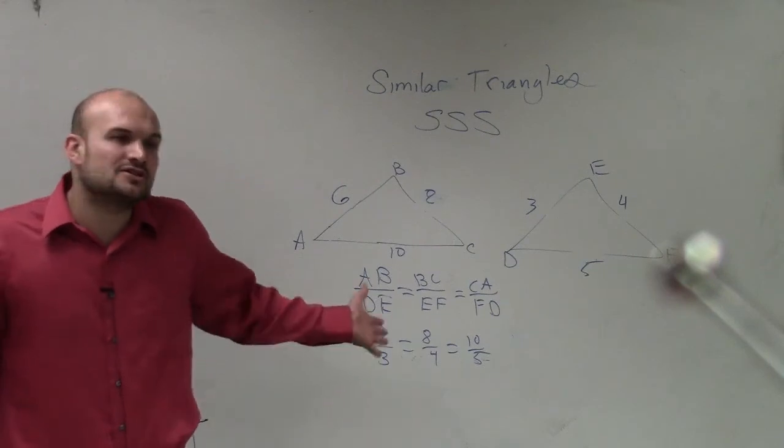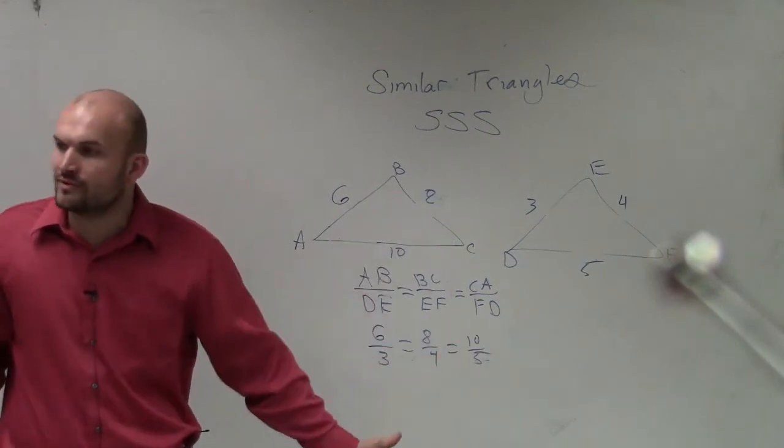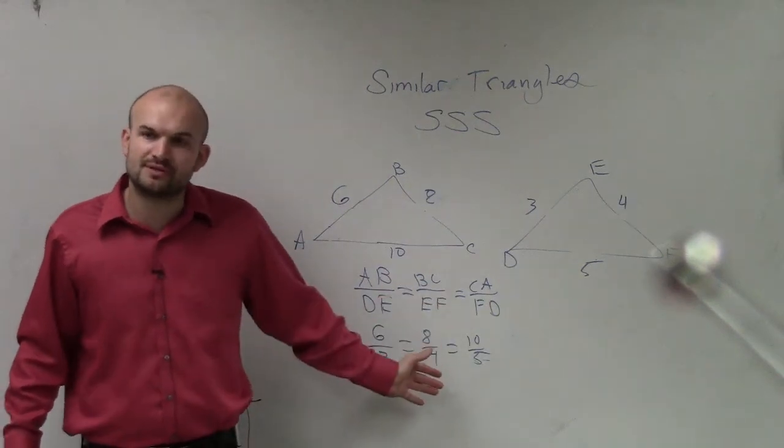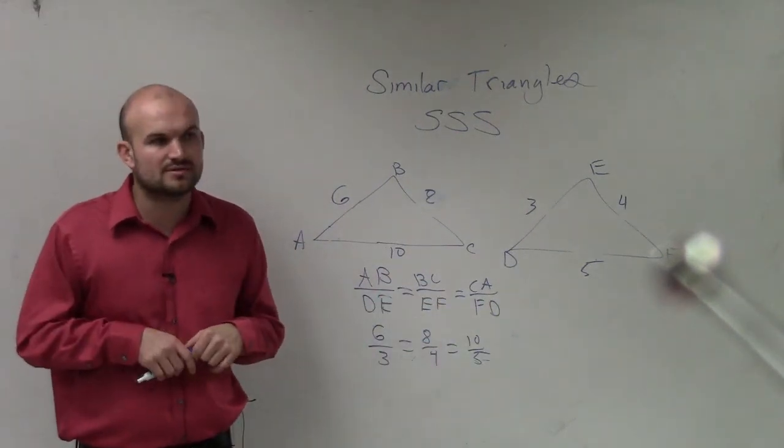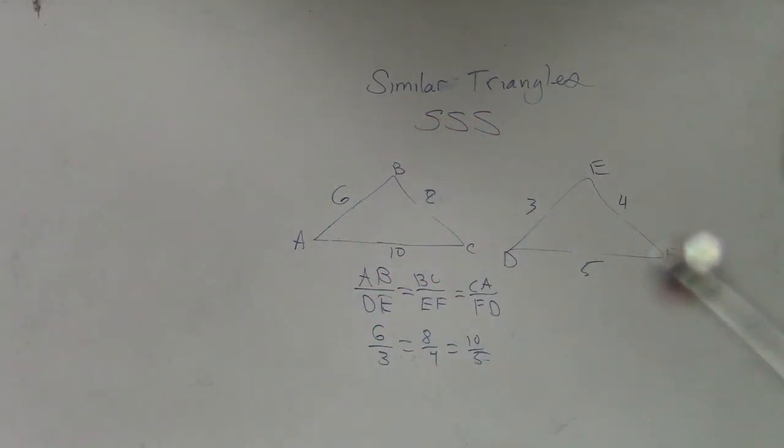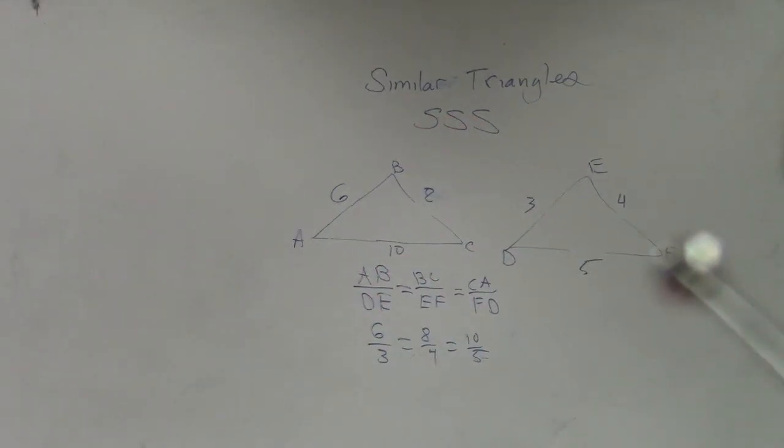Yeah, so if you can determine that all three sides have all equivalent ratios, they're not equal in measurement, but they have equivalent ratios between their sides, we have similar triangles. OK? And that's that one.